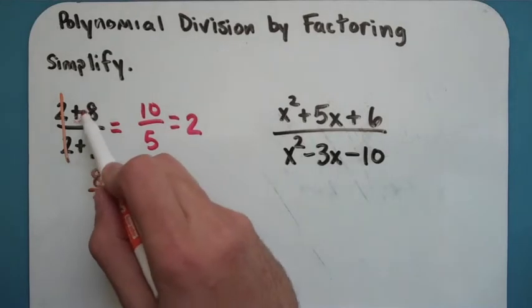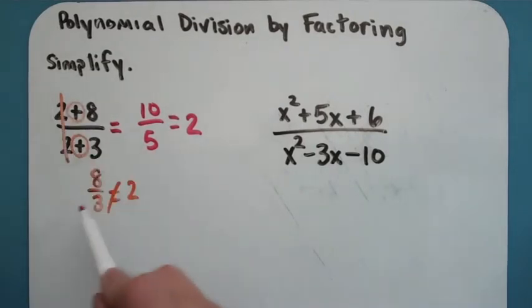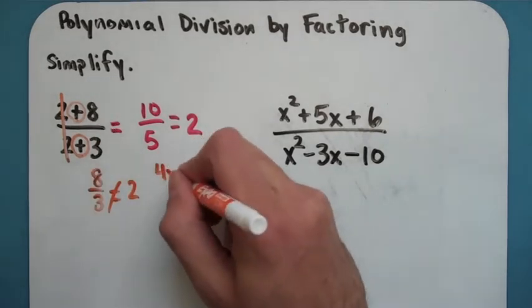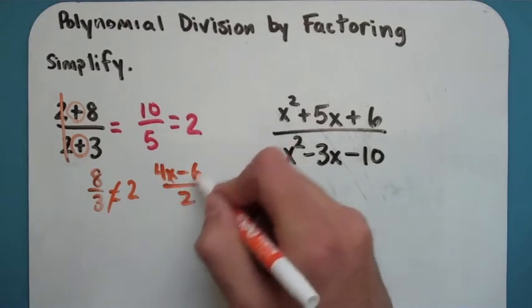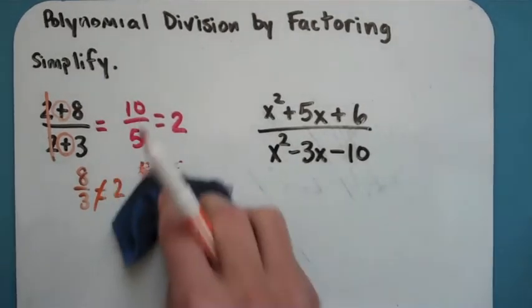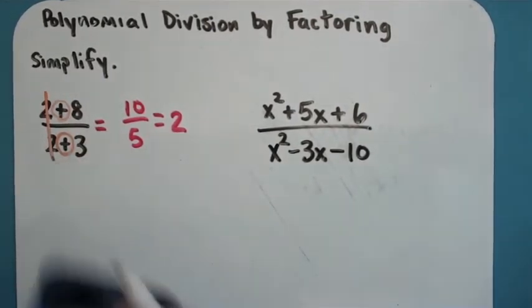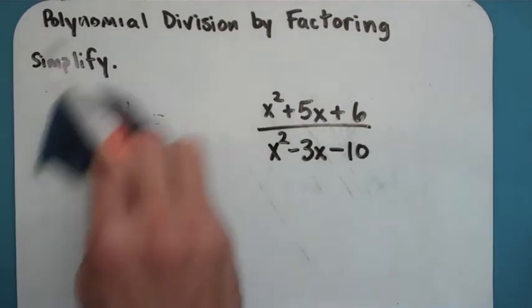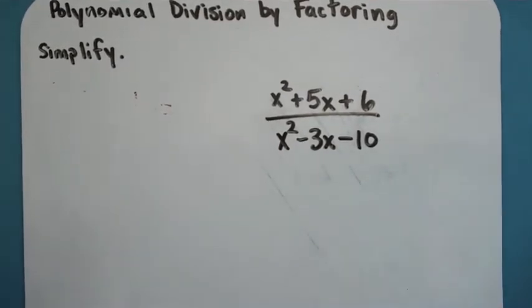When you see little pluses or minus signs here, you can't slash out unless you take it off of each part. That's why before when we saw things like 4x minus 6 over 2, we have to divide both parts here. The same thing goes on these problems right here. You're not allowed to just cancel out your x squareds. Instead what we're going to do is factor the top and the bottom of this equation.